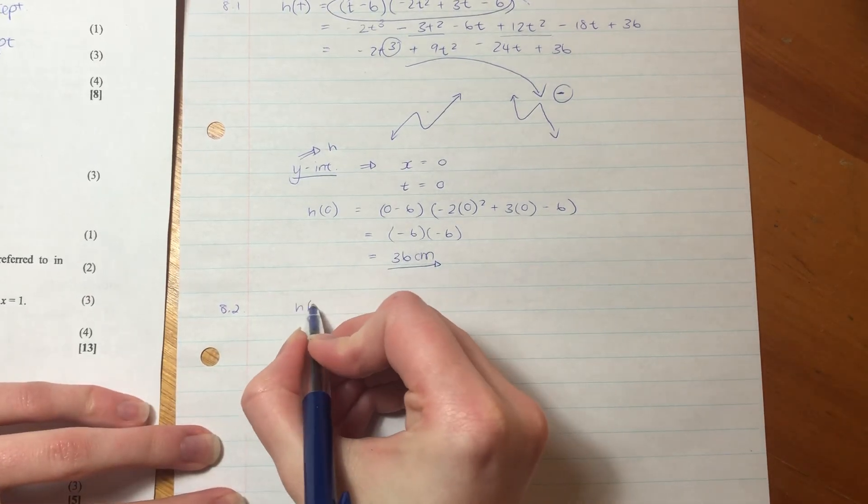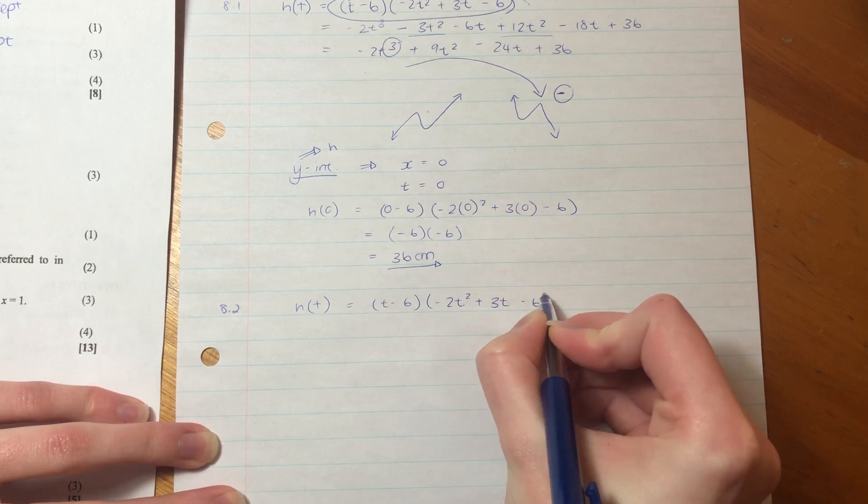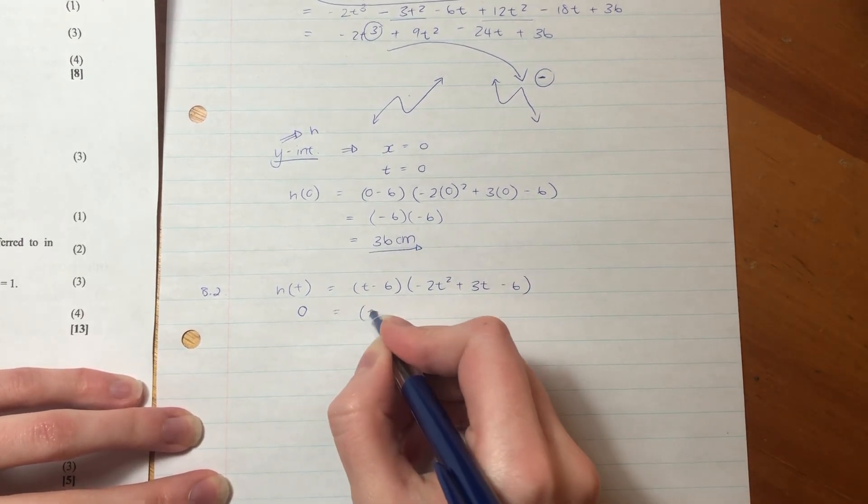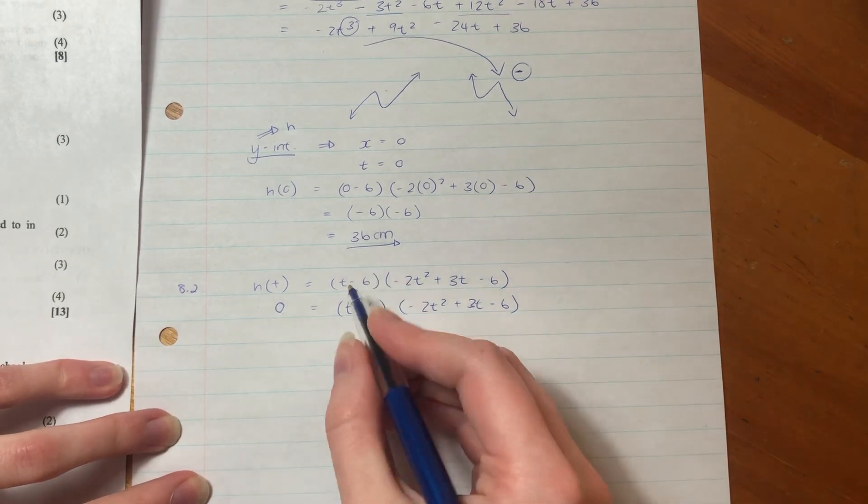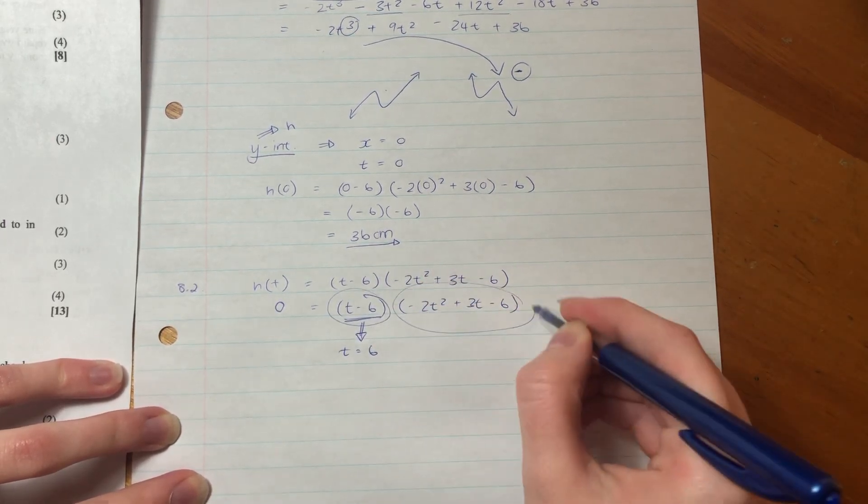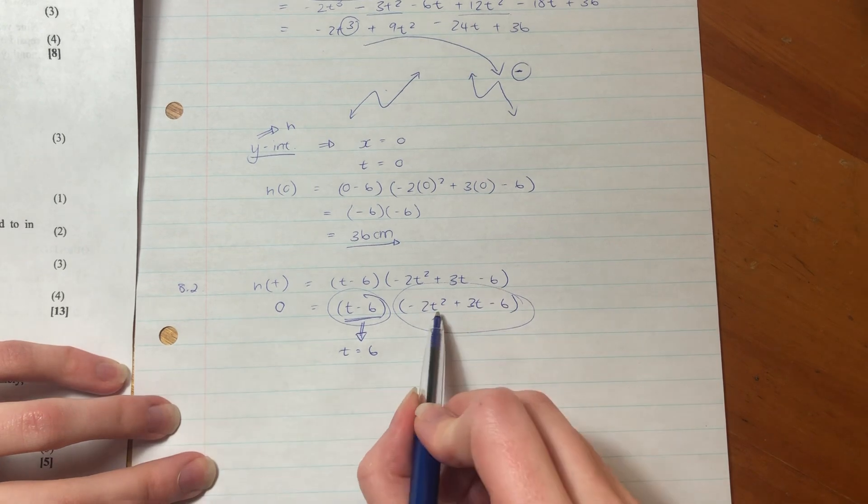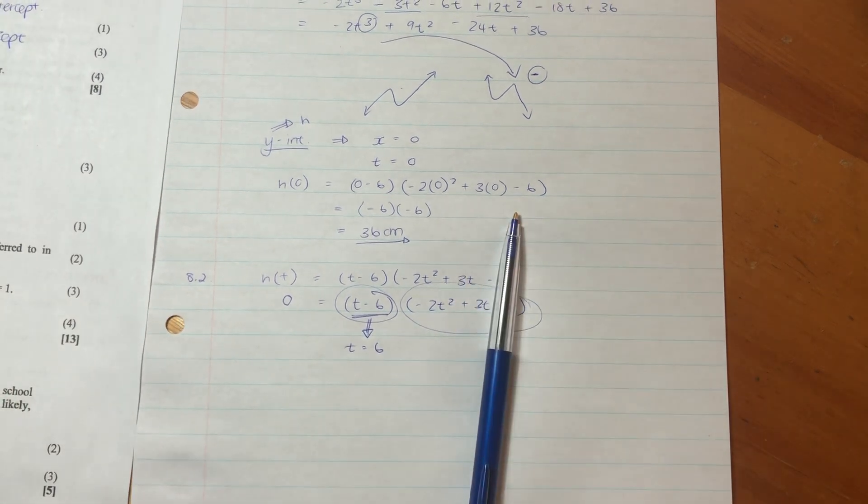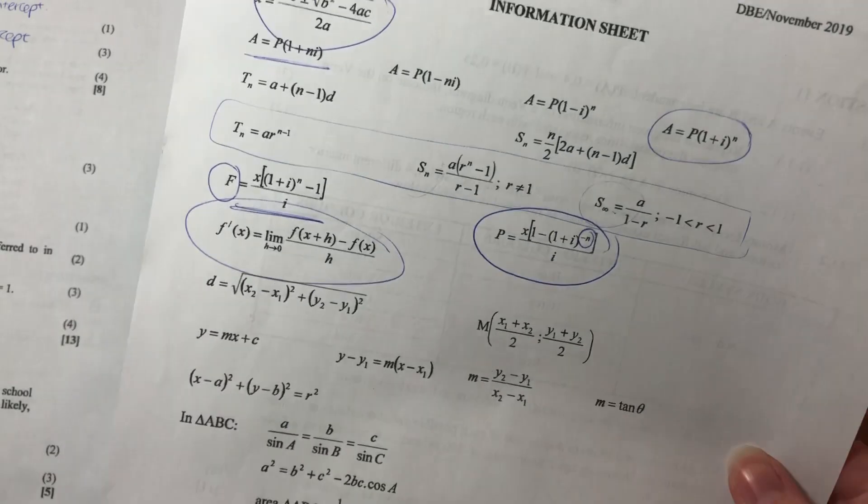So let's just go and put that in. So again, I'm using h of t, t minus 6, negative 2t squared plus 3t minus 6. And what they're asking for is the other intercept. So we make this equal to 0 this time. So we know that obviously one of the intercepts is going to equal 6, because we have this here. This equals 0 when t equals 6. This one is a tricky one because it actually, let's use maybe the quadratic formula or something like that because this is not an easy one to factorize.